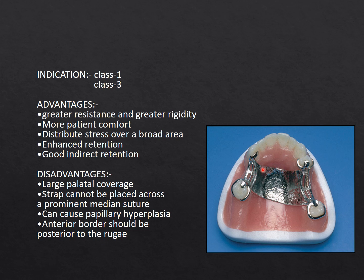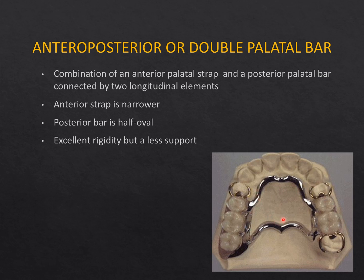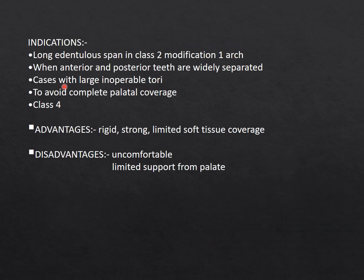In the case of a single palatal strap, always ensure the anterior border ends behind the rugae in the hard palate. In cases with large tori in the maxilla, the anterior-posterior palatal bar can bypass tori on either side — making it an excellent indication. In Kennedy's Class 4 situations an anterior-posterior palatal bar can be used, but ideally a horseshoe strap is much better.